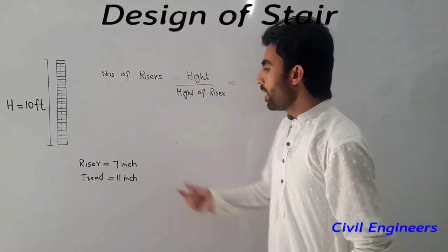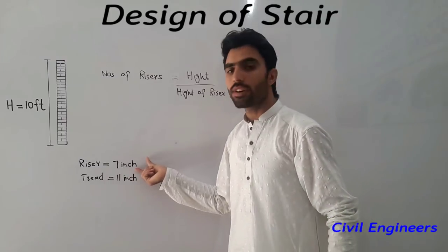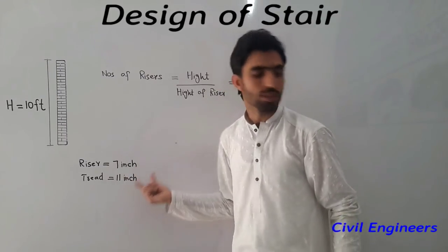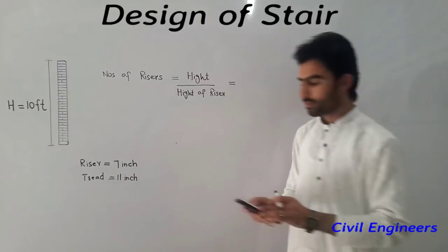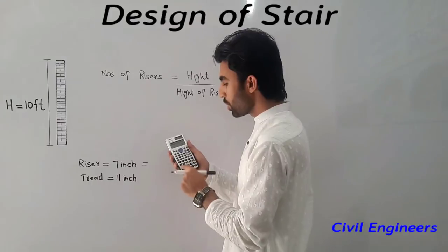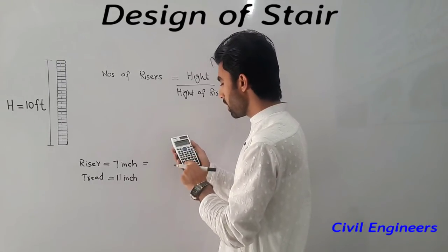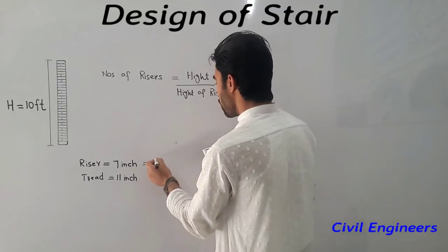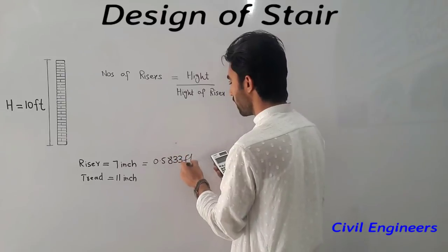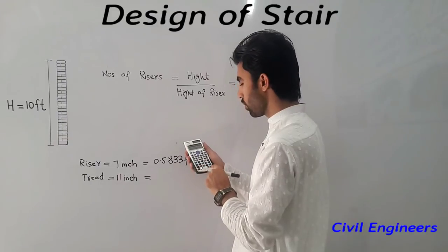Look here, the wall height is 10 feet and the riser is in inches, so I will convert the riser to feet. So 7 inches divided by 12 inches equals 0.5833 feet. I can convert the tread: 11 inches divided by 12 inches equals 0.9166 feet.